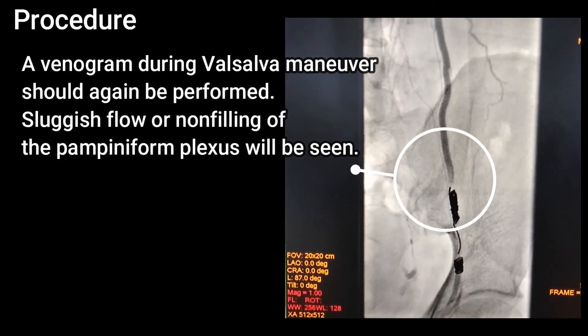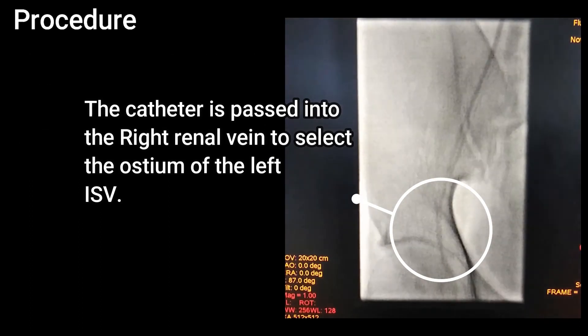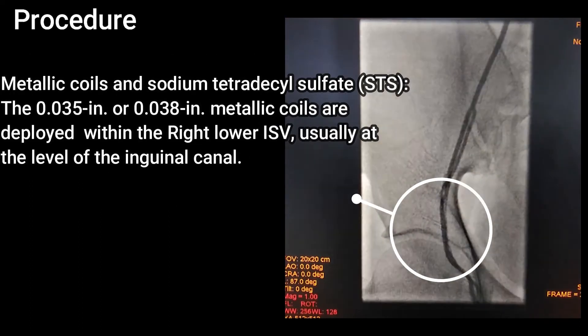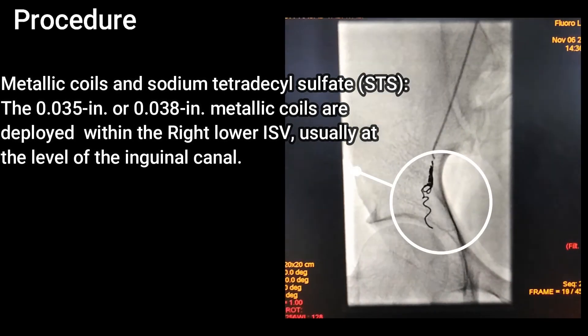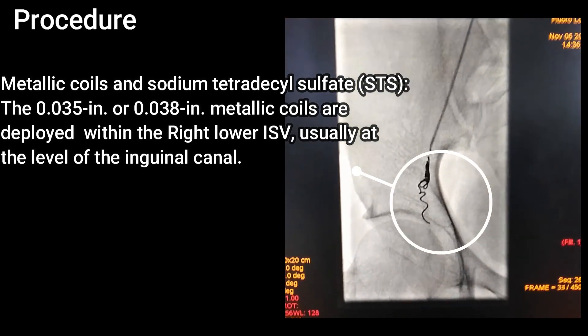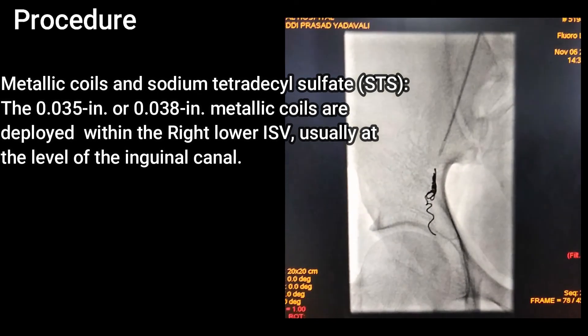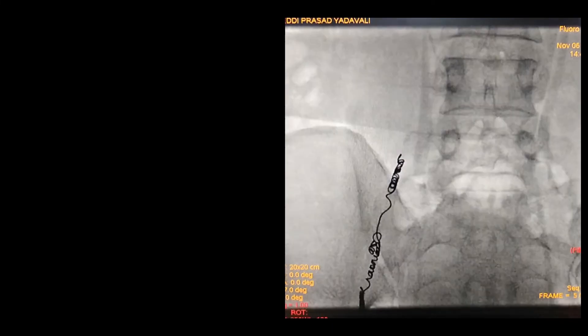The catheter is then passed into the right renal vein to select the ostium of the right ISV. The metallic coils are deployed within the lower ISV, usually at the level of the inguinal canal. At the end, sluggish flow or non-filling of the pampiniform plexus will be seen, confirming successful occlusion.